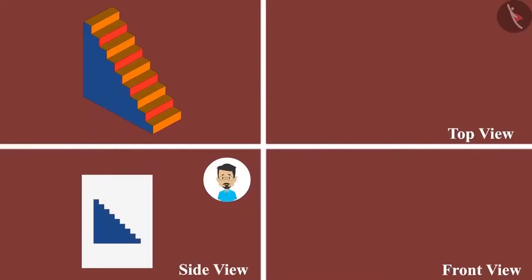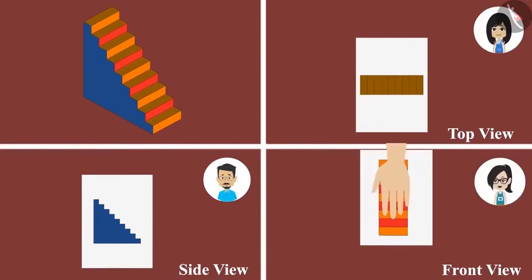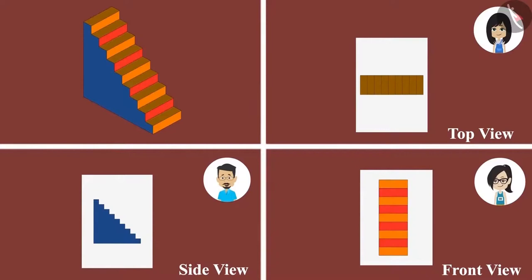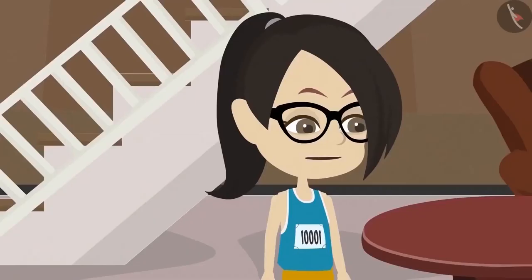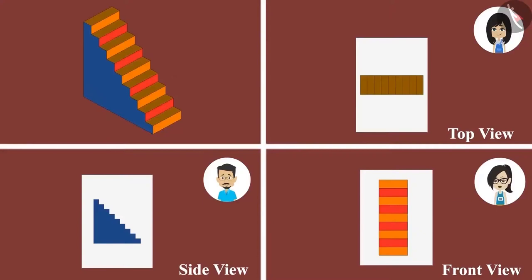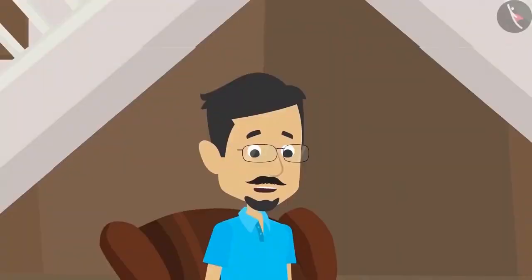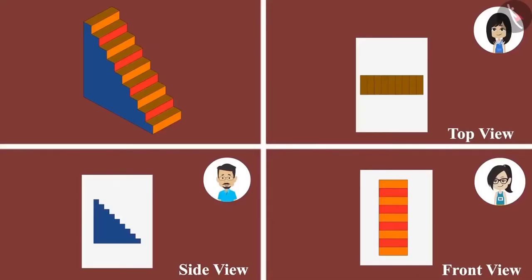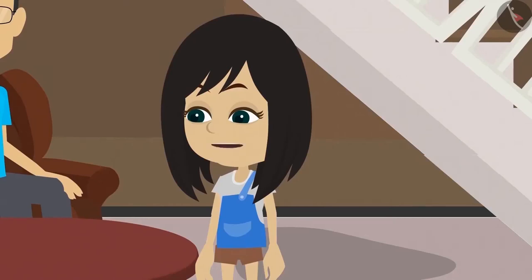I have completed the drawing from my side. Even mine is complete. Even I have completed it. The three of us have made a picture of the same staircase seeing it from different sides. That's why each of our drawings look different. Now I have understood what is three-dimension, and that when you look at them from different sides, their shapes appear different. Yes, but do you know that to draw the shape of 3D objects accurately, the drawing is made from three different sides, like the way we drew this staircase. But what is this three-sided drawing called?